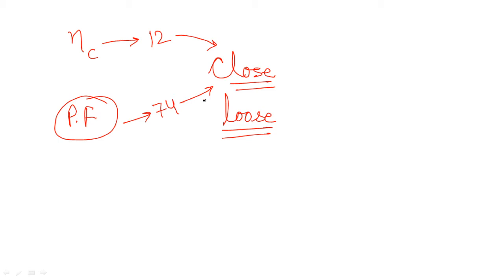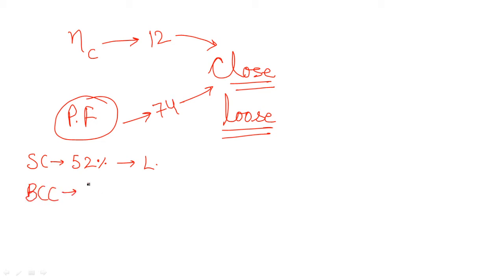For the simple cubic case, the packing fraction value in percentage is 52%, which means it is a loose packed structure. For BCC, the packing fraction value is 68%, which again shows it is a loose packed structure. I am writing the packing fraction values for simple cubic and for BCC.